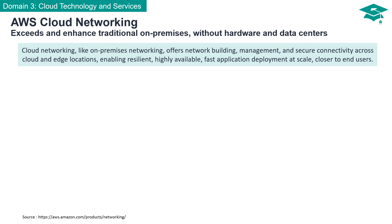AWS Cloud Networking not only exceeds but also enhances your traditional on-premises solutions, all without the need for hardware and physical data centers. To better illustrate this, let's embark on a journey into the world of AWS Cloud Networking through the story of Stark Industries, a pioneering military weapon manufacturer from Marvel's Cinematic Universe.